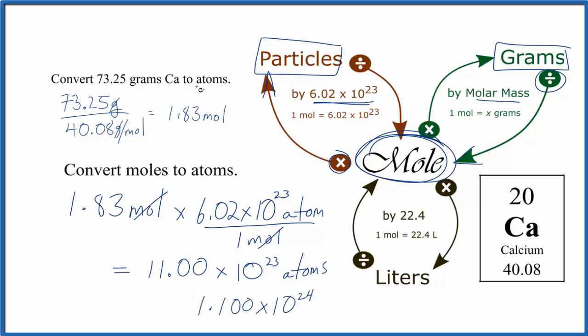So that's how we get from grams of calcium to atoms. We have our grams, we get to moles, divide by the molar mass. Once we have our moles, we just multiply by Avogadro's number, and we get the number of calcium atoms.